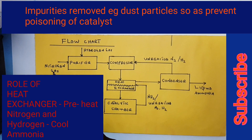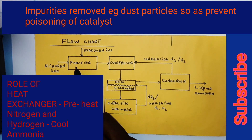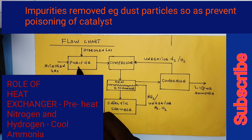Nitrogen and hydrogen, which are the raw materials, are pumped into the purifier. The purifier is used to remove impurities, for example dust particles. The reason for removing the impurities is to prevent poisoning of the catalyst.